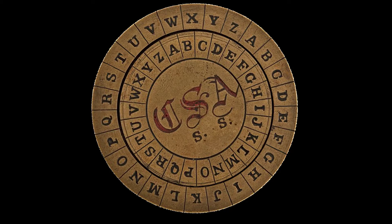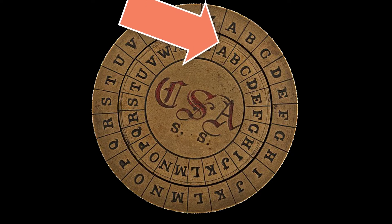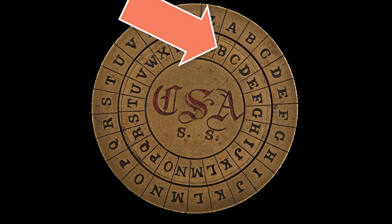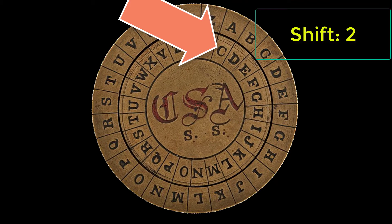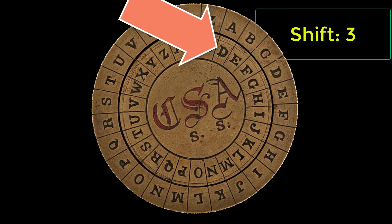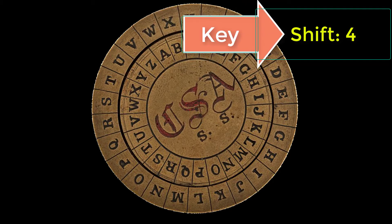So how does it work? First, we're going to set the wheels so that the outside A points to the inside A. Notice that when I rotate the wheel, A will now point to a different letter. Here it points to B — this is considered a shift of 1. Now set to C, this is a shift of 2. D has a shift of 3, E has a shift of 4, and so on. Just remember that the shift is the number of letters away from A. Once you choose a shift, or key, we can start encrypting and decrypting our message.